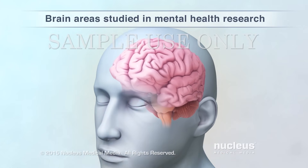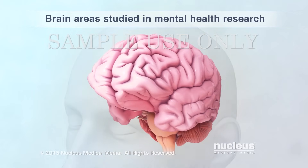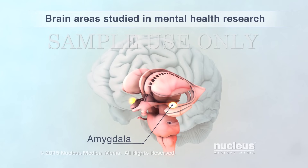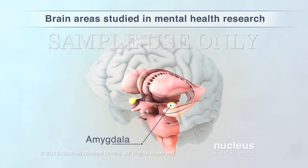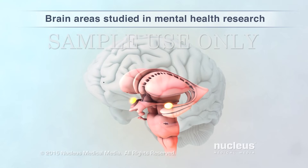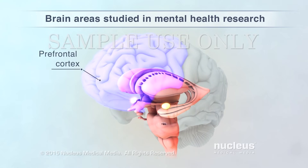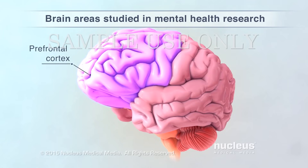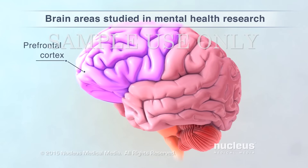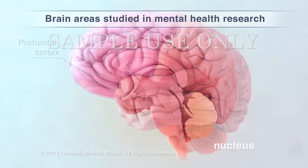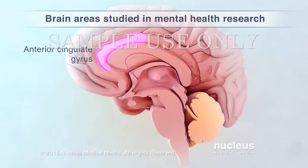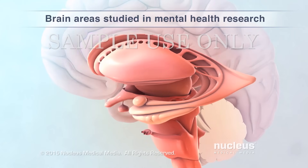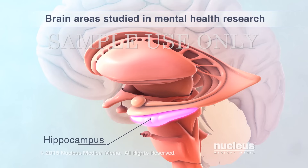Scientists study how certain brain areas affect mental health. For example, the fear area of the brain, called the amygdala, helps you avoid harmful things and escape danger. The amygdala works with the prefrontal cortex to control your response to fearful and stressful events. The prefrontal cortex also helps you make decisions, solve problems, and recall memories. The anterior cingulate cortex helps you focus on tasks and control emotions. The hippocampus helps make and store new memories.